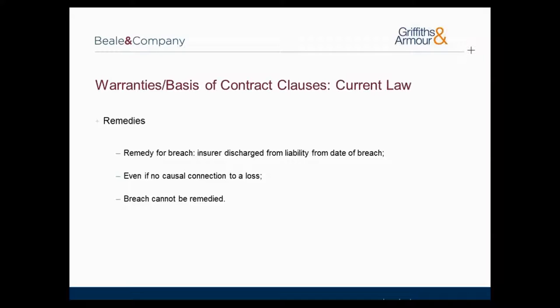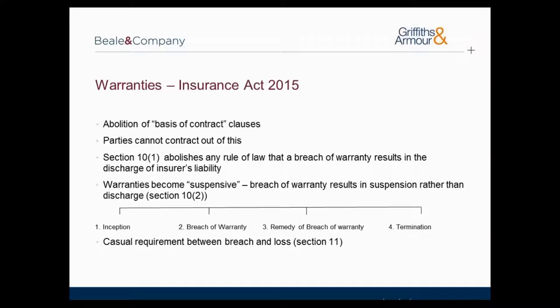Under the current law, the breach of a warranty automatically discharges the insurer from liability completely from that point onwards, even if the breach is remedied or unconnected to the risk being insured. This means an insurer may avoid liability even if the breached warranty term was entirely unrelated to the type of loss that occurred. For example, under current law if a property insurance policy for a warehouse contains a warranty that it will be fitted with a working burglar alarm, and that warranty is breached and the property is damaged by fire, the insurer may be able to avoid the policy — even though the burglar alarm would not have prevented the fire.